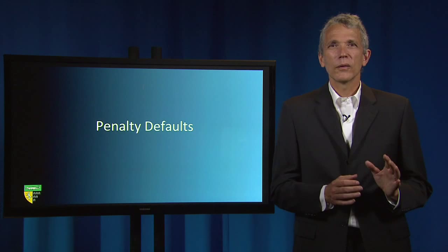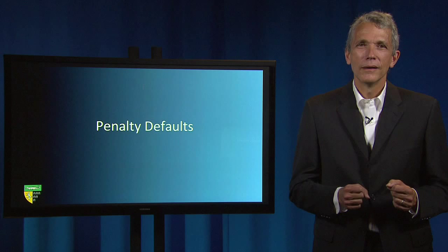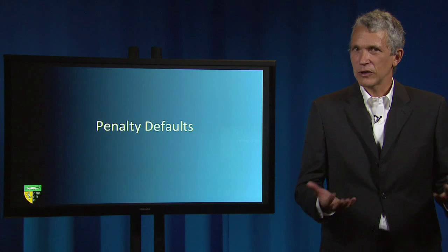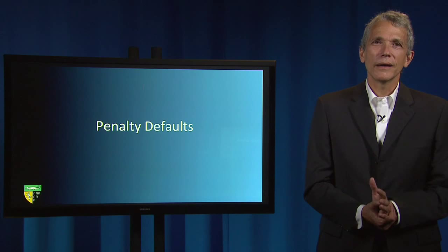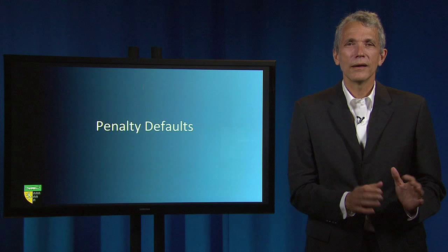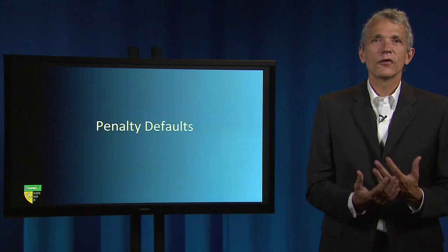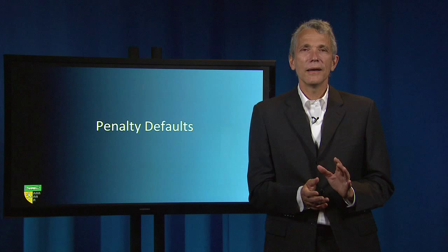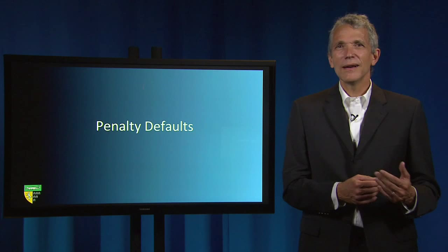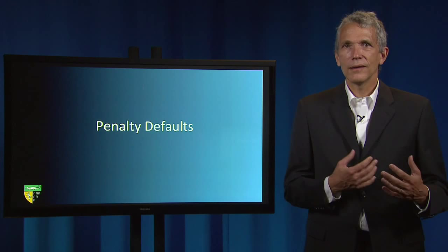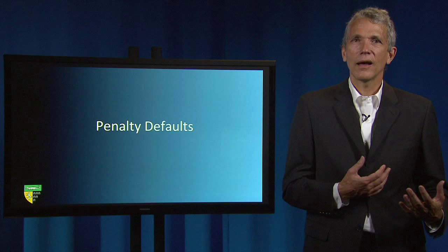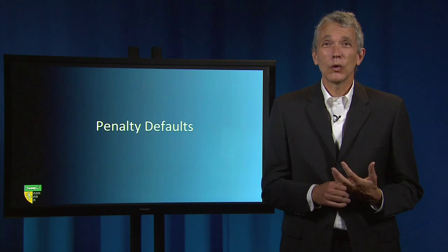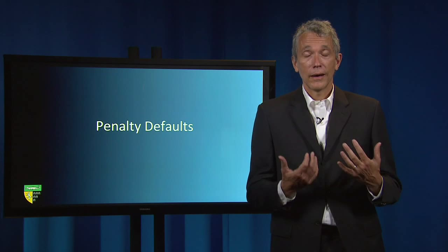In contrast to the received wisdom, penalty defaults are purposely set at what the parties would not want in order to encourage the parties to reveal information to each other or to third parties, especially courts. When strategic considerations cause a more knowledgeable party not to raise issues that could improve contractual efficiency, a penalty default that penalizes the more informed party may encourage the revelation of information. The Hadley rule, which limits consequential damages to those that are foreseeable by the breaching party, is arguably an information-forcing default of just this kind. It gives the party with hidden information about its unforeseeable losses, in the case of breach, a new reason to share that information with the other side. Only by revealing that you as a buyer are likely to suffer unusual losses in the case of seller breach will you be able to recover extra damages from a breaching seller.